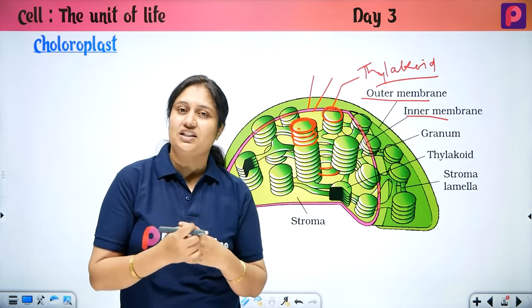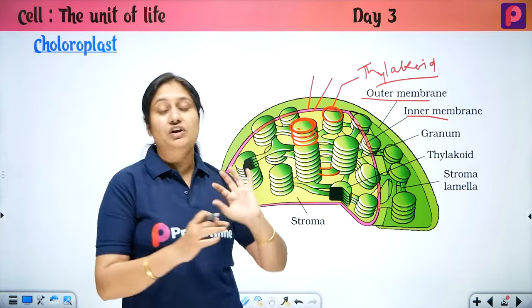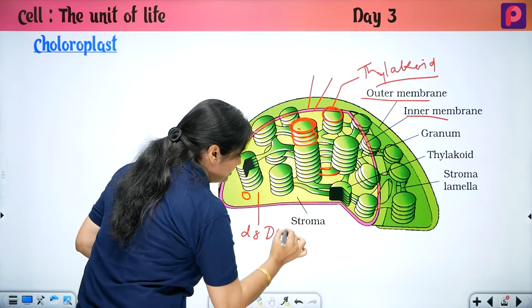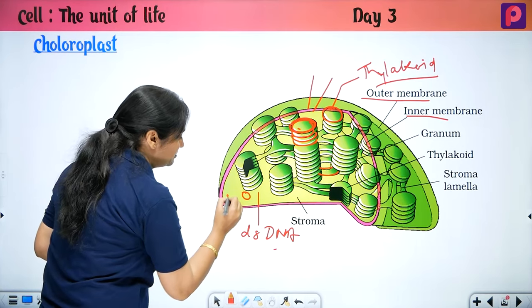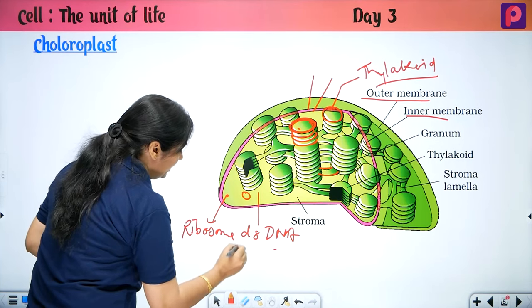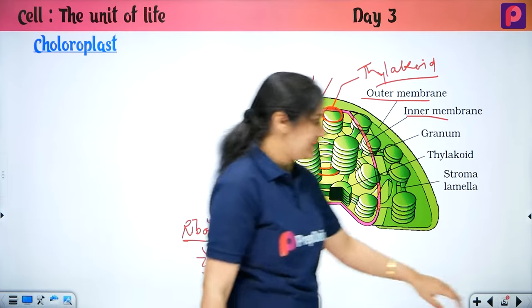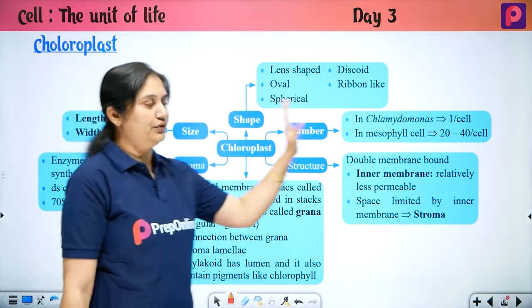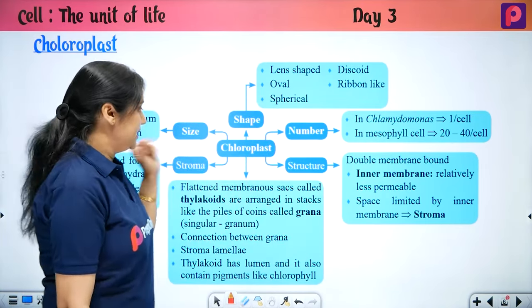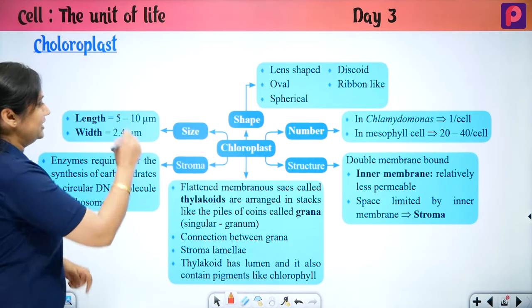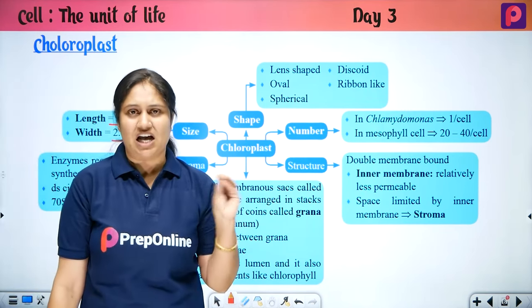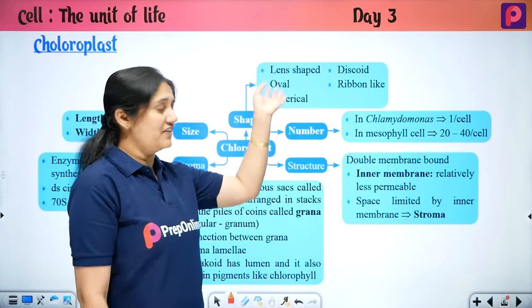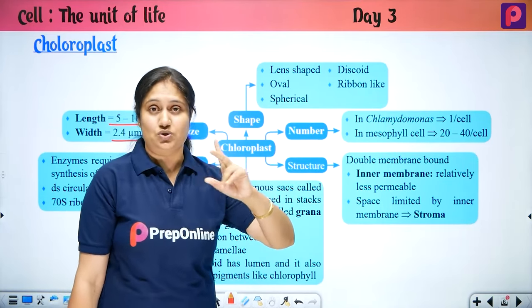In the thylakoid membrane, chlorophyll is the main pigment. It traps light and converts it into chemical energy. The chloroplast size: length is 5 to 10 μm and width is 2.4 μm. In the stroma part, there is circular double-stranded DNA like a prokaryotic cell, and also 70S type ribosomes, making it also autonomous and inherited.